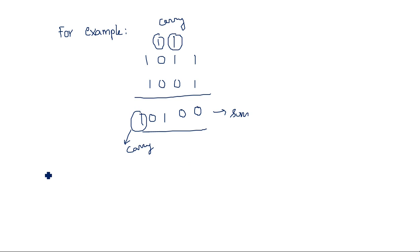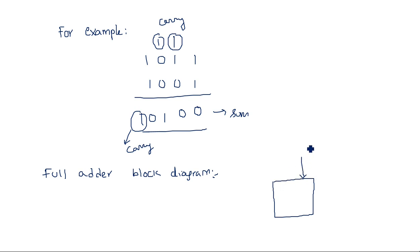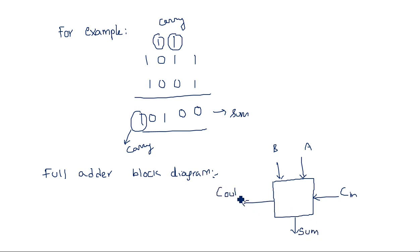Before drawing the 4-bit parallel adder diagram, let us recall the full adder block diagram. The full adder is having 2 inputs A and B, and one more input CIN — carry in. Full adder is used to add 3-bit numbers: A, B, and CIN. CIN is the carry input. When you are adding these, we will have sum and carry out (Cout). Full adder is having 3 inputs and 2 outputs. The 3 inputs are A, B, and any carry generated from the previous stage — that is CIN.